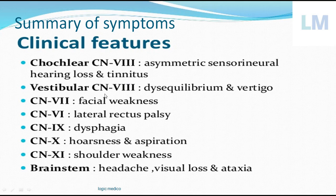Summary of symptoms: Eighth cranial nerve — sensorineural hearing loss. Seventh cranial nerve — facial weakness. Sixth cranial nerve — lateral rectus palsy resulting in internal squint. Ninth cranial nerve — dysphagia, difficulty swallowing. Tenth cranial nerve — hoarseness of voice and aspiration of fluids. Eleventh cranial nerve — shoulder weakness.